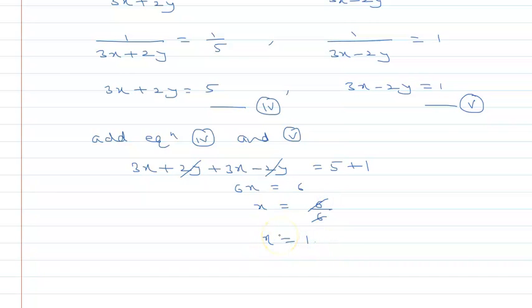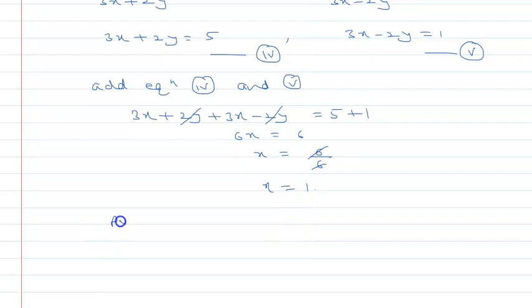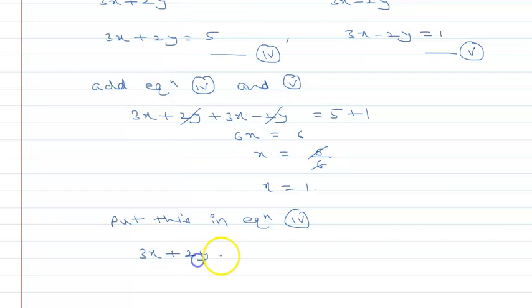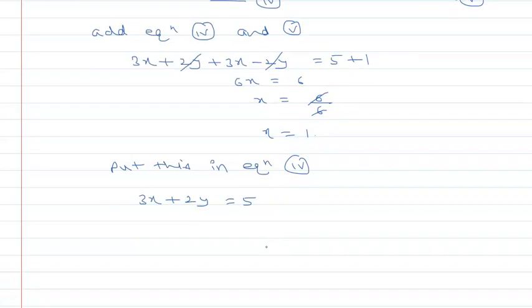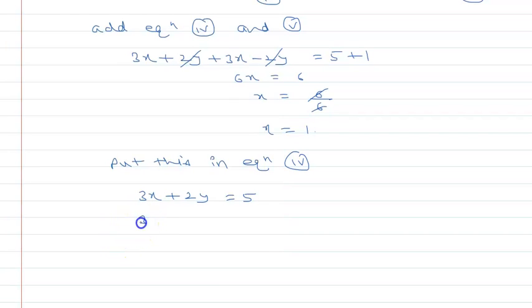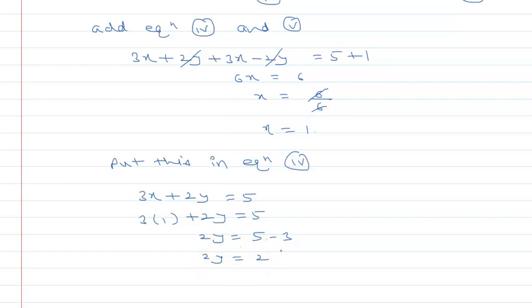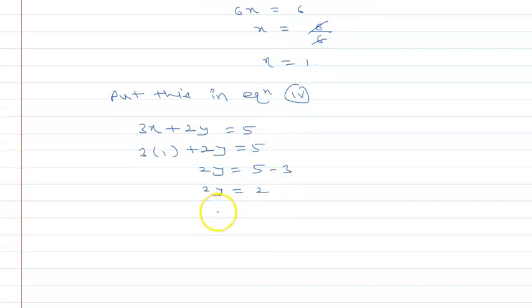Now we put x = 1 into equation 4: 3x + 2y = 5. So 3 into 1 plus 2y = 5, which gives 2y = 5 - 3 = 2, therefore y = 2 upon 2 = 1.